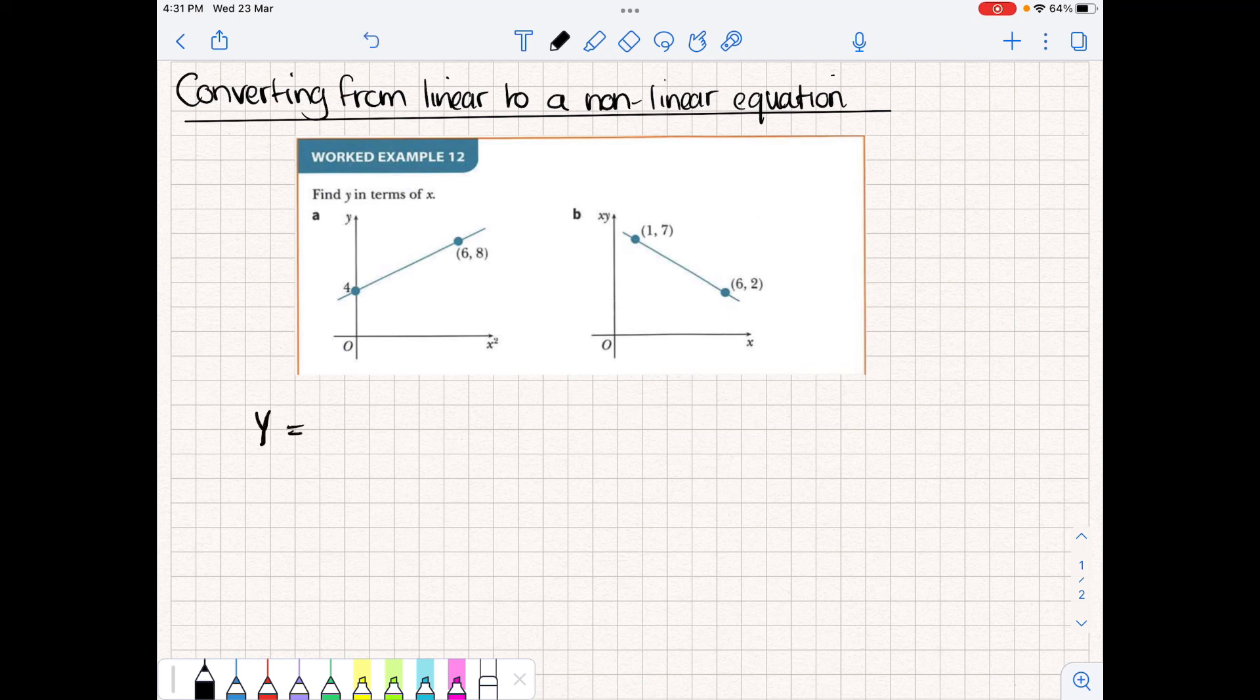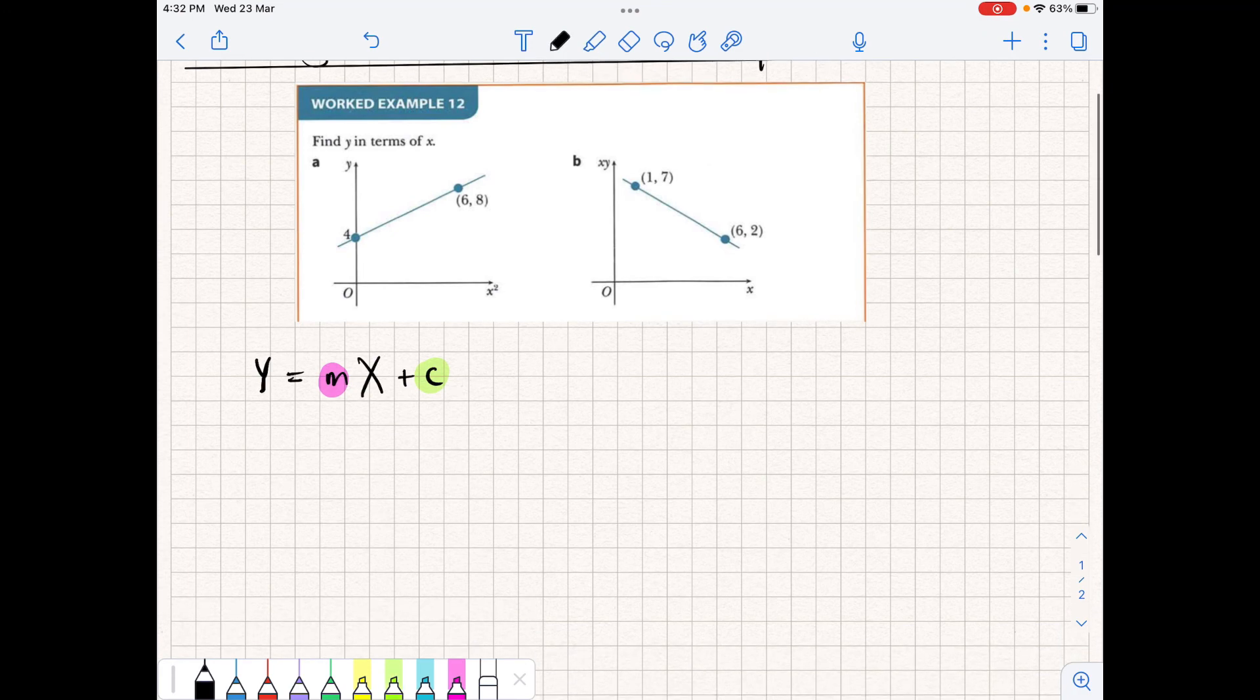So we need to remember the equation for a nonlinear graph is in the form Y = mX + c. So having a look at our equation, you'll notice that we don't know the value for m or the value for c yet. However, we have enough information in order to do that. So using basic coordinate geometry to calculate the gradient, we know the gradient is just change in y over change in x.